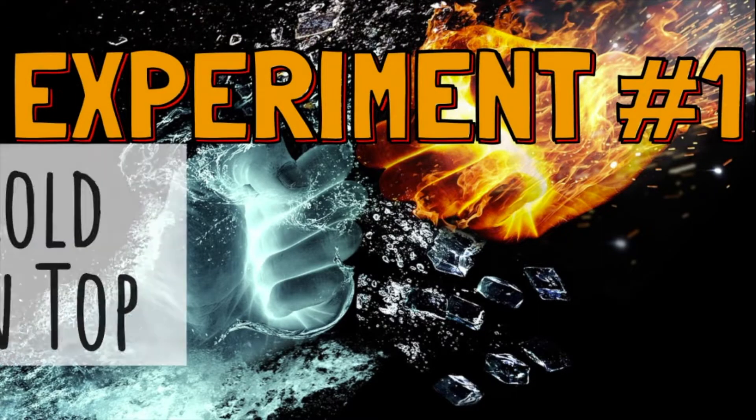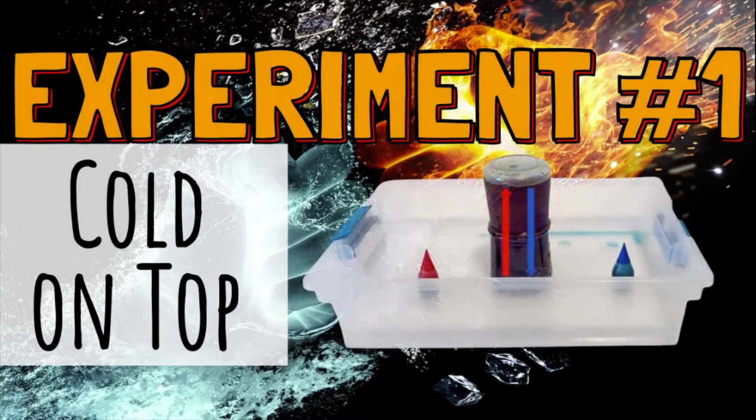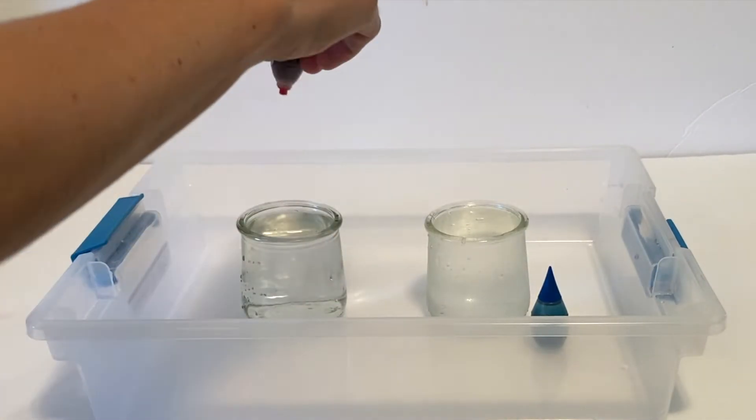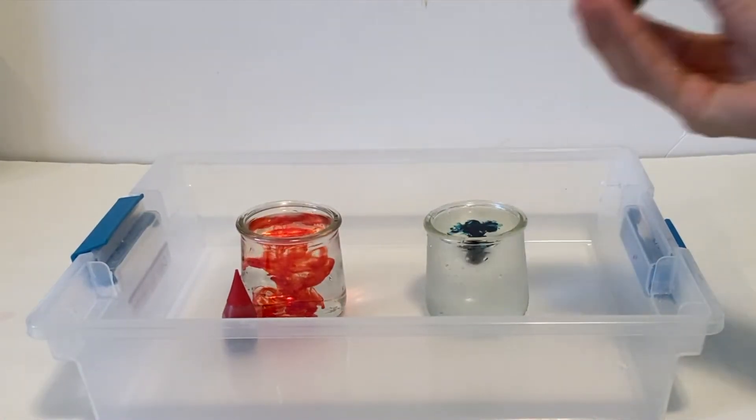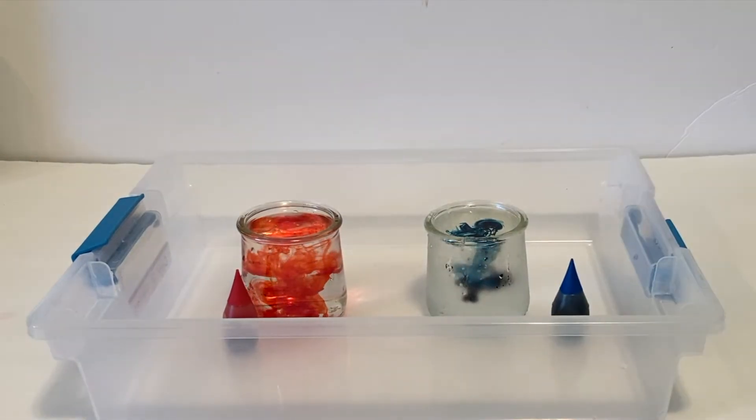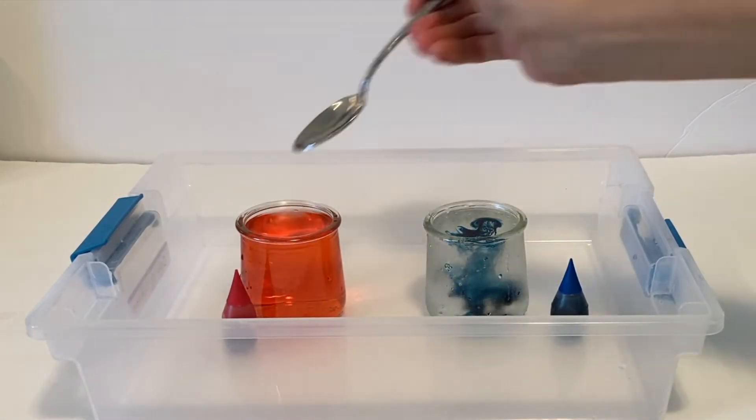In the first experiment, we'll place a jar of cold water on top of a jar of hot water. Start by filling one jar with hot water and adding some red food coloring, and a second jar with cold water and adding some blue food coloring. The hot water shouldn't be hot enough to burn you - think bath water hot.